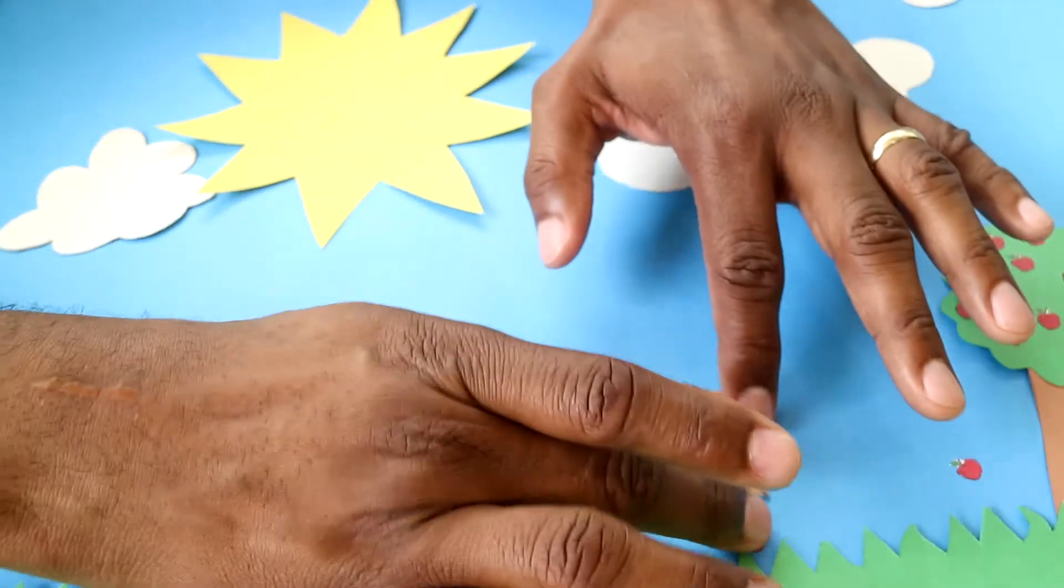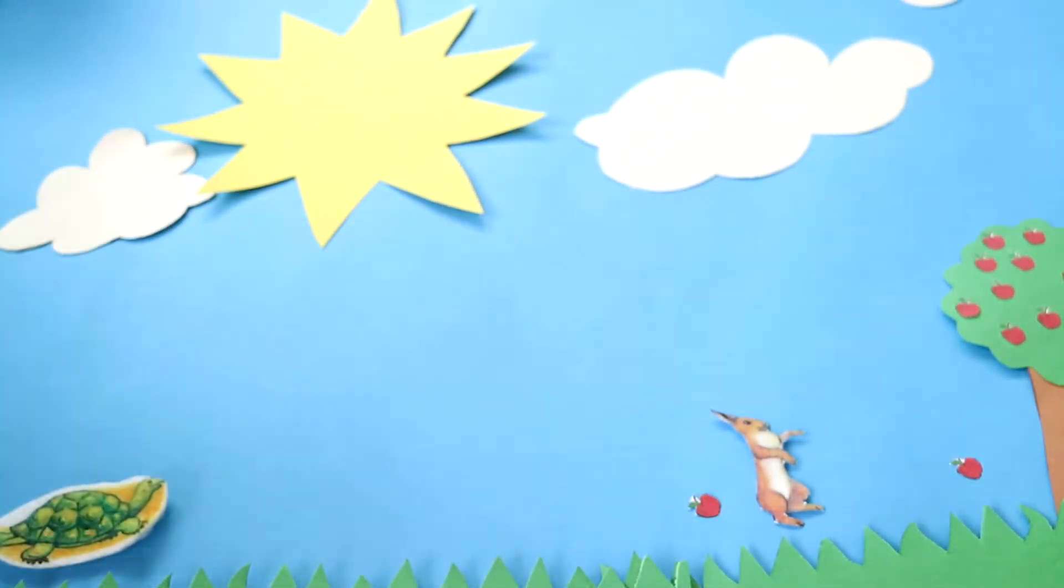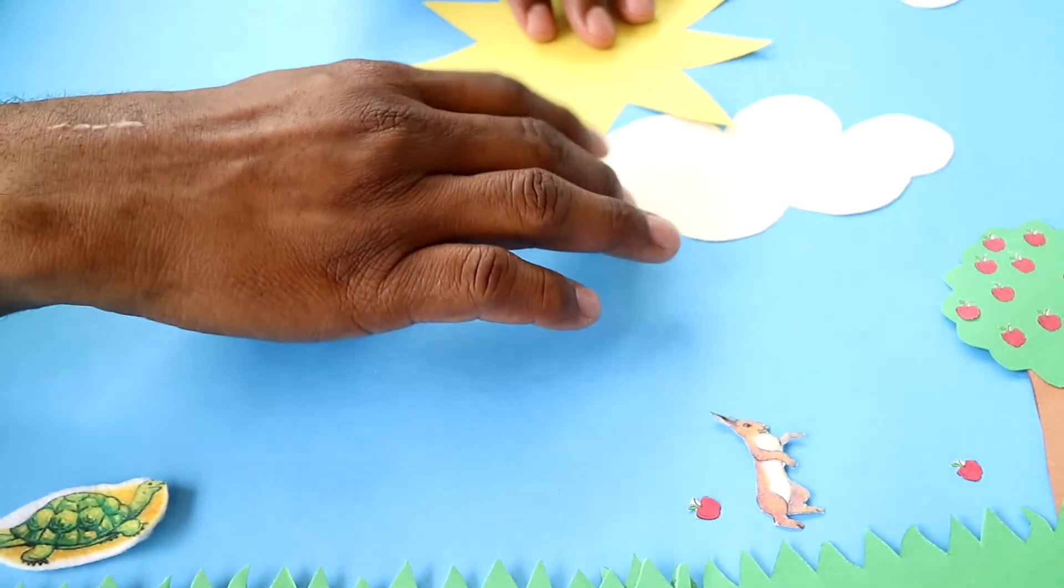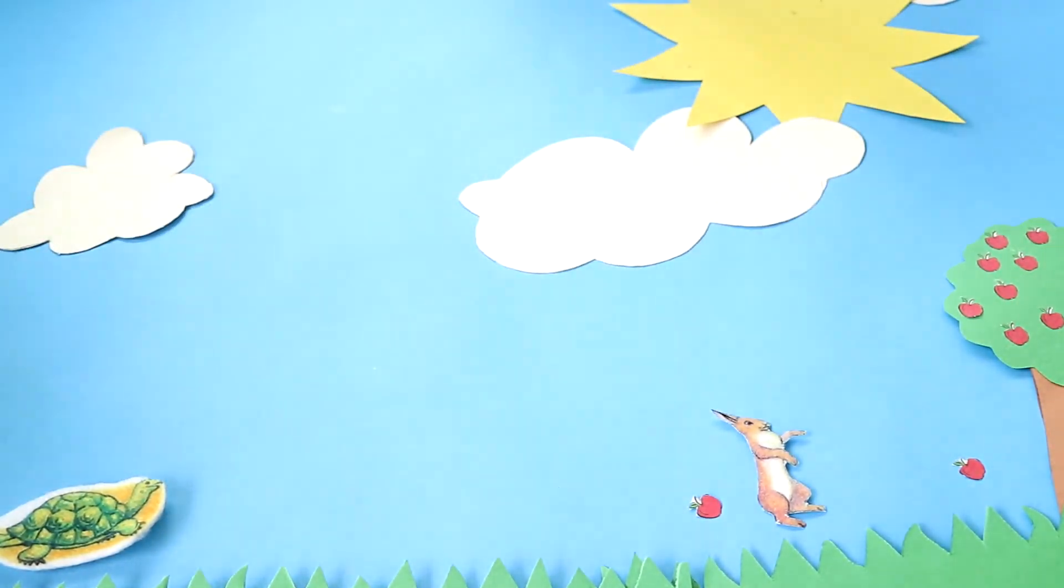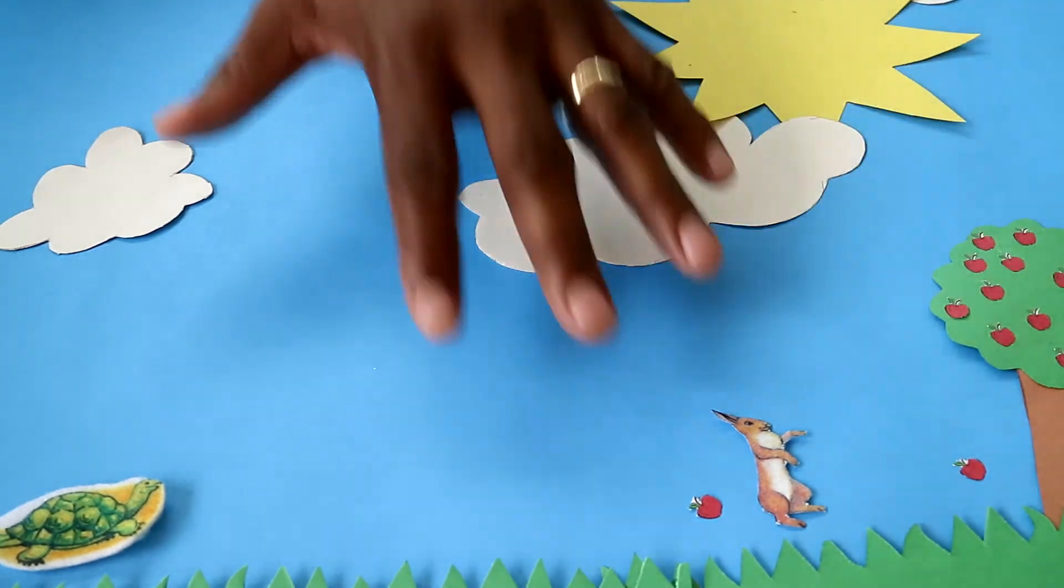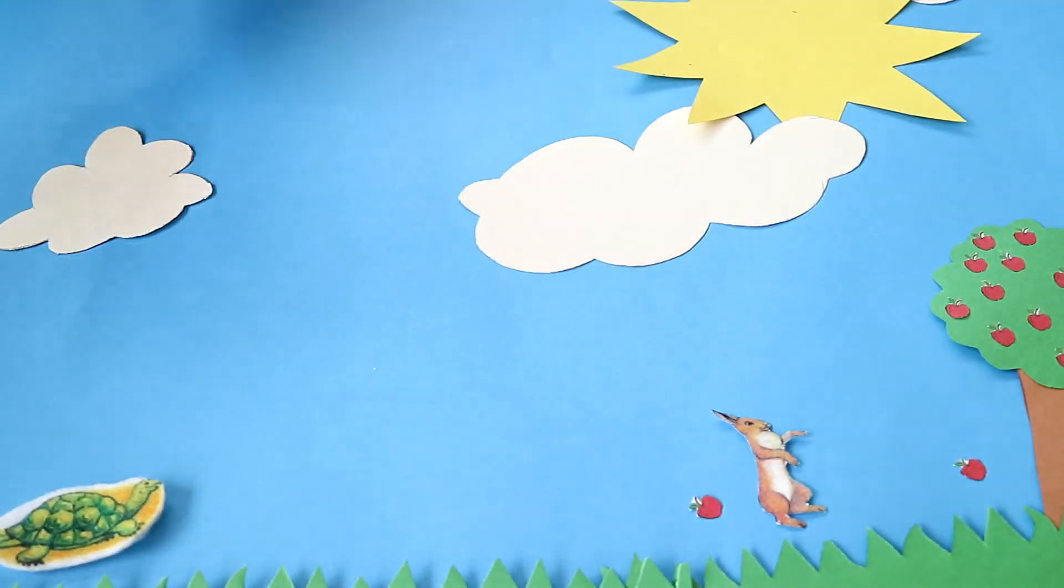And as the rabbit passes the apple, he gains his lead. As the sun moves across the sky, we move from morning into the afternoon. And we must take photographs of every movement in order to create the animation.